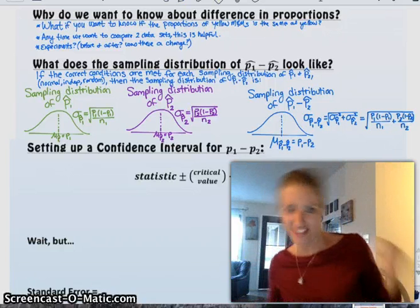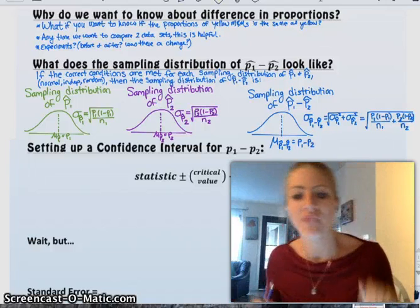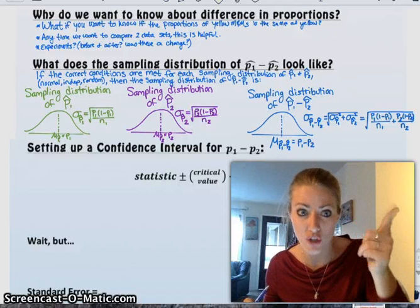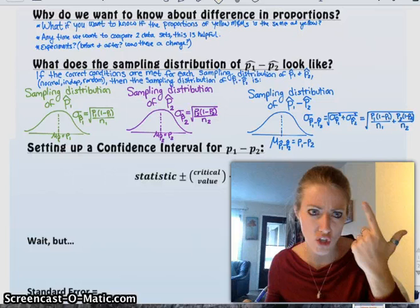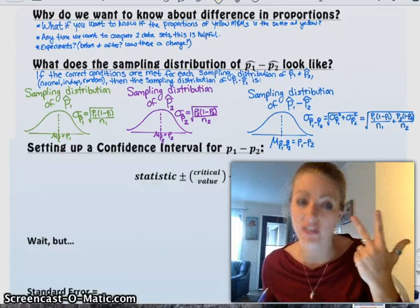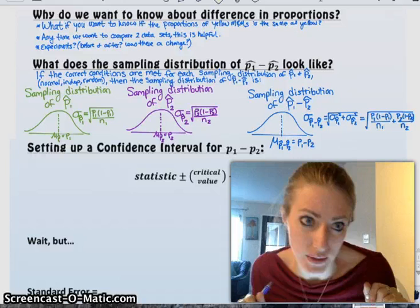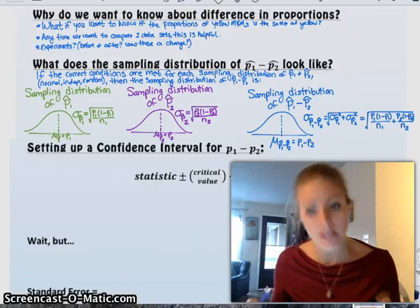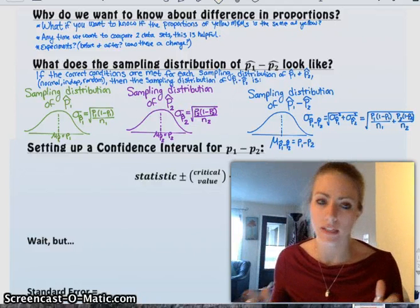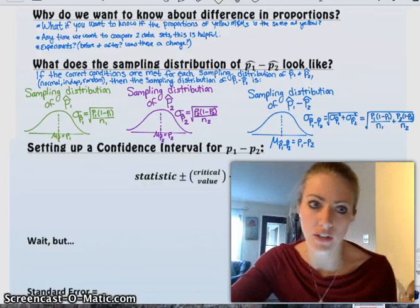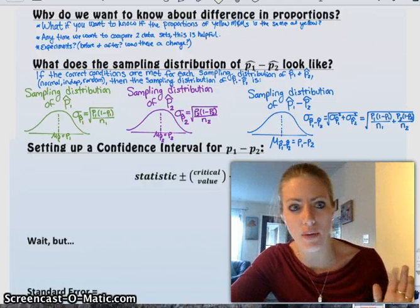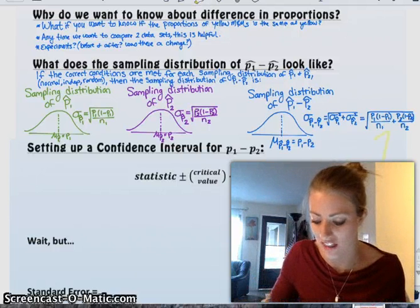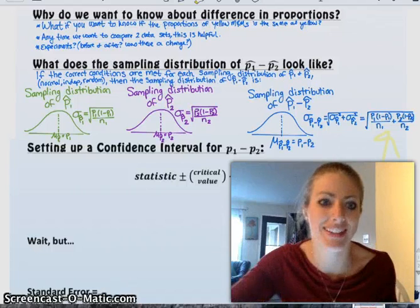So we can go on to make a confidence interval. Confidence intervals. Same as they've always been. Your statistic, plus or minus your critical value, z or t star, times the standard deviation of the statistic. Same thing we've always been doing, except this time now, your statistic is not p hat, but it is p hat 1 minus p hat 2. And your critical value, you figure out exactly the same way as we did before. Standard deviation is this nasty, nasty, nasty looking thing. But it's okay. Don't worry about it.